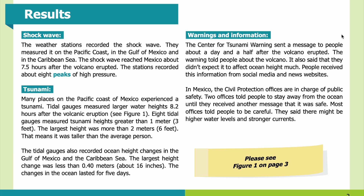Warnings and Information: The center for tsunami warning sent a message to people about a day and a half after the volcano erupted. The warning told people about the volcano but said they didn't expect it to affect ocean height much. People received this information from social media and news websites. In Mexico, civil protection offices are in charge of public safety. Two offices told people to stay away from the ocean until they received another message that it was safe. Most offices told people to be careful, saying there might be higher water levels and stronger currents.